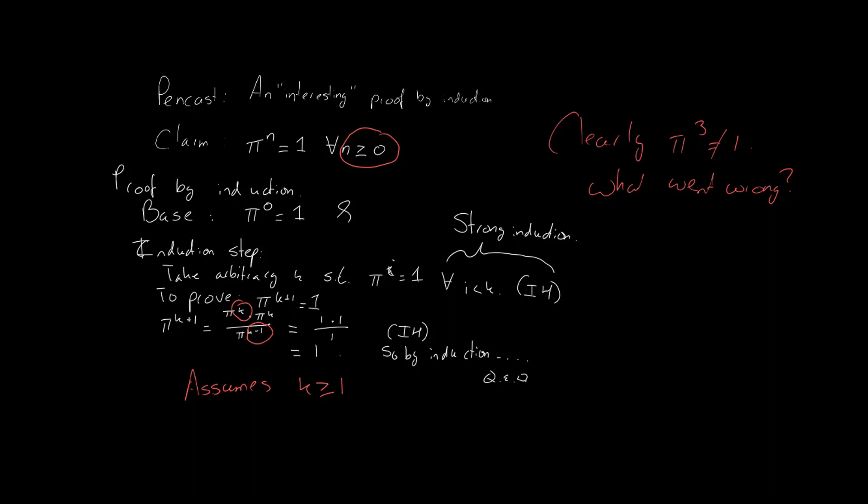So if we assume k to be larger than or equal to 1, we need another base case. We need to also show that it holds in the base case where n equals 1. But that's not possible, is it? Because for n equals 1, we have π to the power 1, which is equal to π. And as I said earlier, I'm pretty sure π does not equal 1.